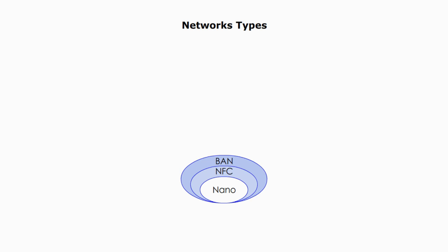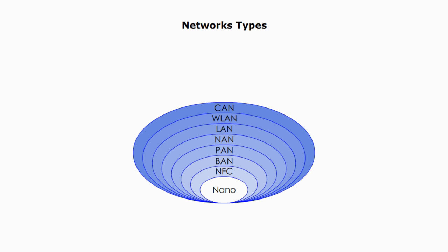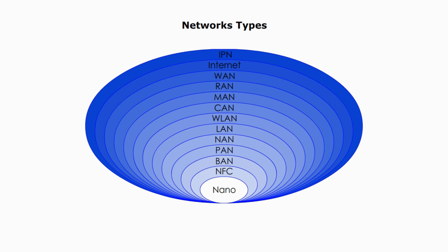Today, I will briefly talk about 13 types of computer networks by spatial scope, the area they can cover.